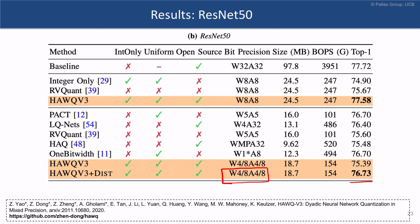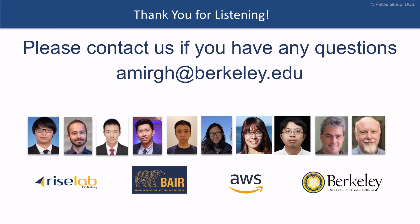We can go even further and perform low-precision dyadic quantization using 4-bit and 8-bit. We restrict the weights and activations to only use 4-bit and 8-bit quantization, and we achieve state-of-the-art accuracy of 76.73%, which is significantly higher than even floating point quantization approaches.